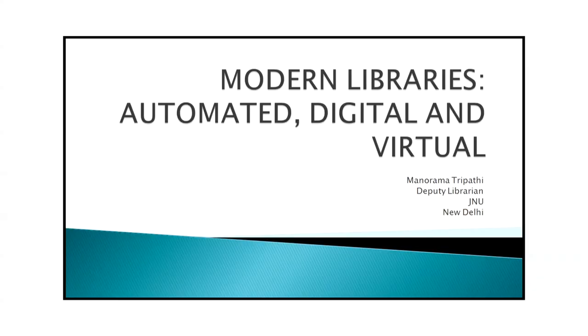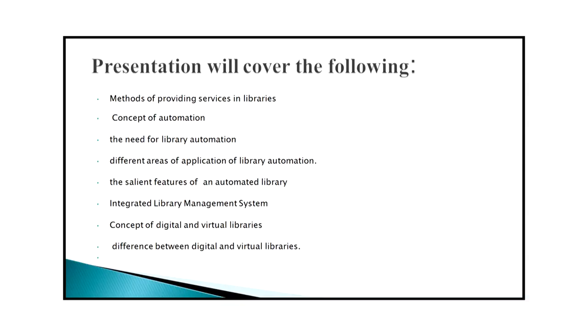Dear learners, I am Manohar Matrapathi. I welcome all of you to this Library and Information Science Program at senior secondary level. Last time we talked about various types of libraries and information centers. Today we are going to focus on modern libraries — automated, digital and virtual. Our presentation will cover the concept of automation, the need for library automation, different areas of application of library automation, the salient features of an automated library, integrated library management system, and the concept of digital and virtual libraries.